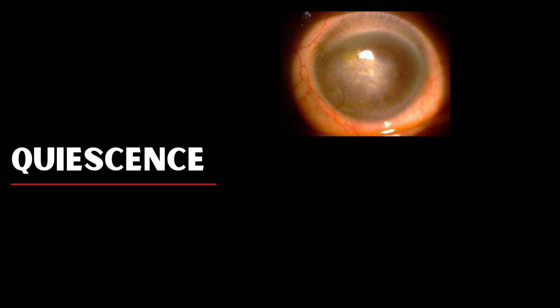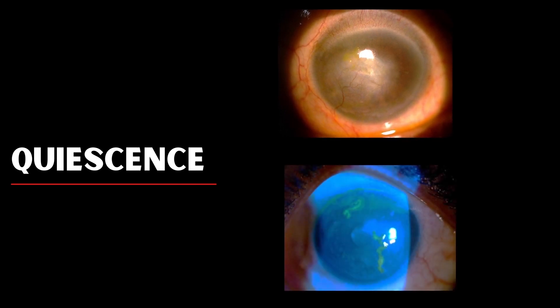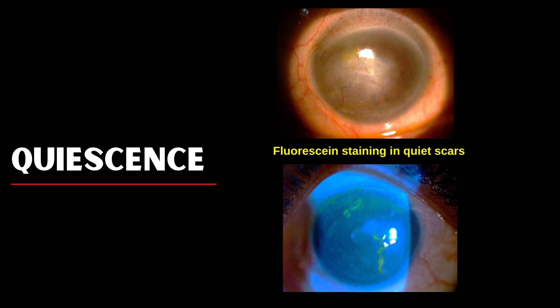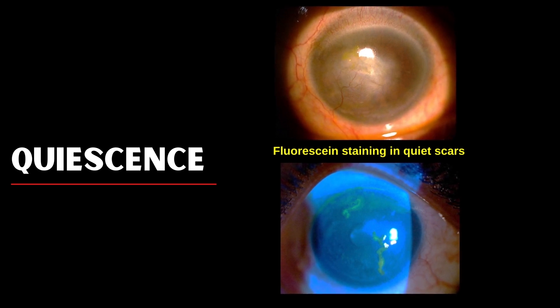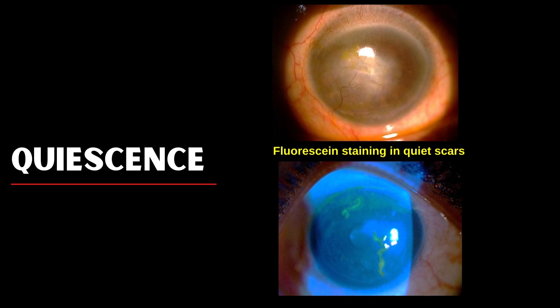The eye needs to be quiet before surgery in HSV grafts. This shows a scar with vascularization, but on staining we found fluorescent stippling of the epithelium. These can either be bits of healing dendrites or surface irregularity over the scars. Either way, the eye is not yet ready for keratoplasty.